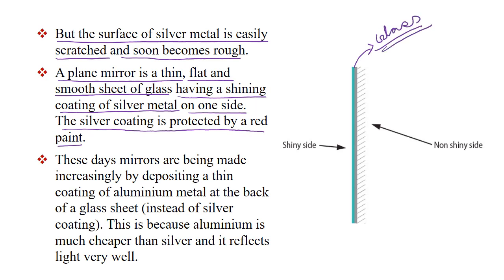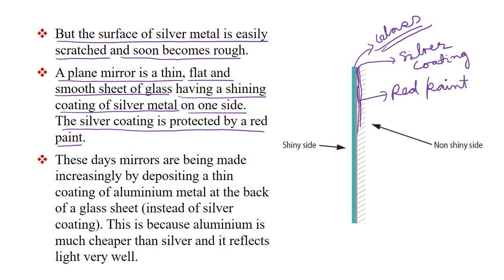यह जो plain mirror बनाया जाता है — एक glass लिया जाता है जो thin, flat and smooth होगा. इसके पीछे एक पतला सा silver का coating किया जाता है, और उस silver coating को protect करने के लिए उसके ऊपर एक red color का paint चढ़ा दिया जाता है ताकि silver coating हटे नहीं. Opposite side जो है वो हमारा shiny side होता है जो बहुत ज्यादा चमकीला और reflected होता है.